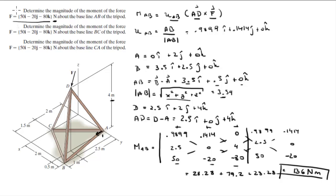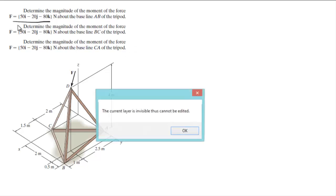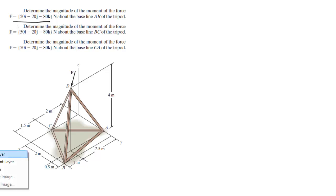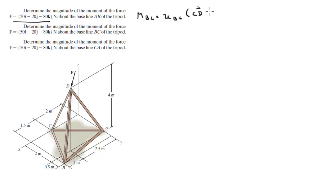That's the first one. Now we're going to do the second one: the moment about BC. That's given by U_BC dot (CD cross F). U_BC is equal to the vector BC over the magnitude of BC, where BC is given by C minus B.